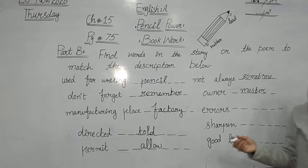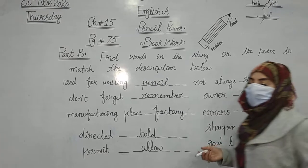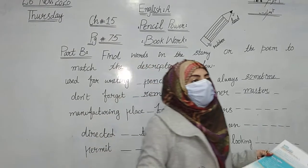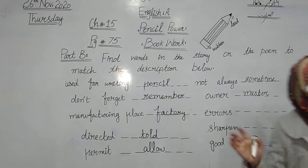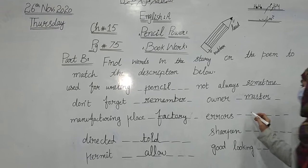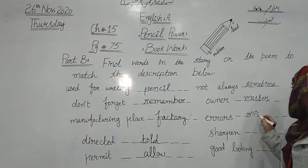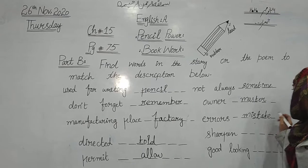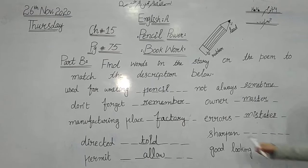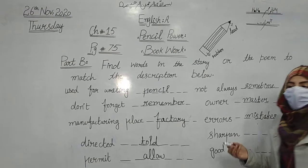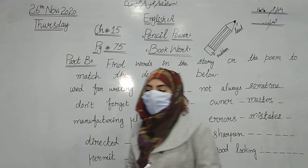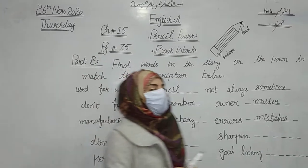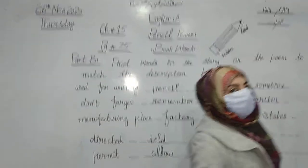Next is 'error'. What does error mean? You've done a lot of errors in your work — so what have you done? You've done a lot of mistakes. The meaning of error is 'mistake'. Next, 'sharpen' — we sharpen our pencil with a sharpener. So sharpen means to scrape or scrap.